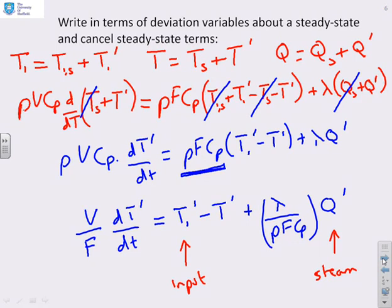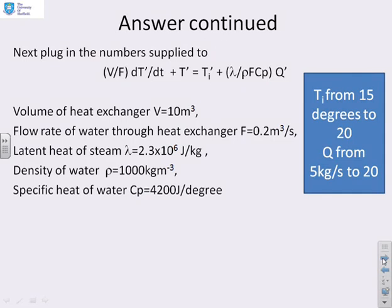So now we've got our expression. Now I'm going to put in my data. So we have V equals 10, flow rate 0.2, latent heat 2.3 times 10^6, density 1000, and Cp 4200. So what can I do? I can work out various numbers.